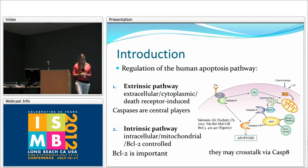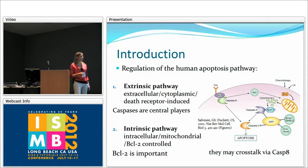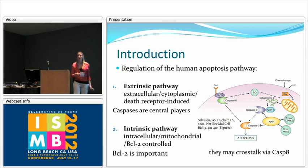It is important to understand the regulation mechanism of the pathway. There are mainly two pathways: the extrinsic and intrinsic pathway. In the extrinsic pathway, the signal starts from outside the cell and is propagated by caspase 3. In the intrinsic pathway, the signal starts from inside the cell in mitochondria and again propagates by using caspase 3. In the extrinsic pathway, caspases are really important players, and the intrinsic pathway is mainly controlled by B-cell lymphoma 2 protein.